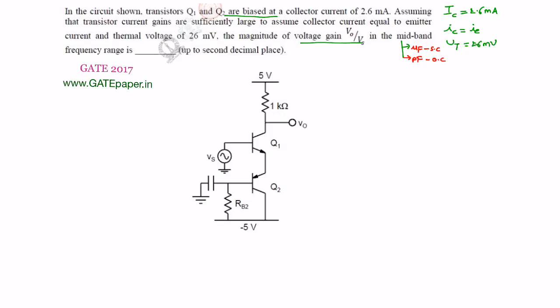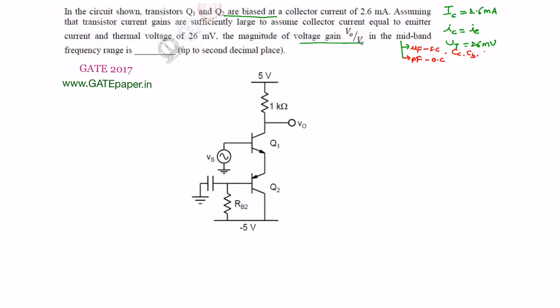Micro-farad capacitors are generally CC, CB, CE. CC, CB, CE are micro-farad capacitors, and CBC and CBE — which are also considered as Cmu and Cpi — are pico-farad capacitors. Pico-farad capacitors act as open circuit; micro-farad capacitors act as short circuit under mid-band frequency range.